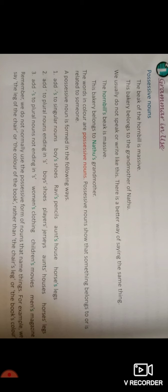Here some examples are given. The first example is: 'The beak of the hornbill is massive.' The second example is: 'The bakery belongs to the grandmother of Nathu.' We usually do not speak or write like this. There is a better way of saying the same things — in sentences, we can use the apostrophe S. This is called possessive nouns.